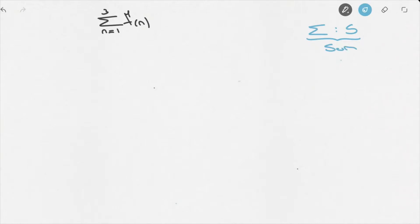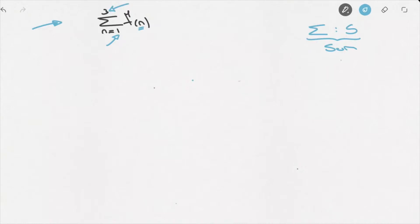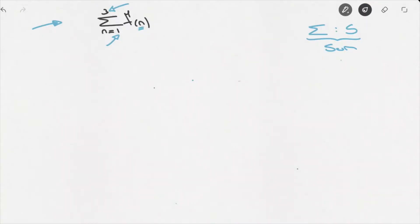So when we see this symbol, we should automatically think and realize that we are dealing with a sum. Back to our expression: what this is asking us to do is to calculate the value we would obtain if we replaced n inside this function of n by all the integers between the initial value written at the bottom and the final value written at the top. For this particular case, the initial value is 1 and the final value is 3, so we'll be replacing n by the values 1, 2, and 3, and adding all of those values together.